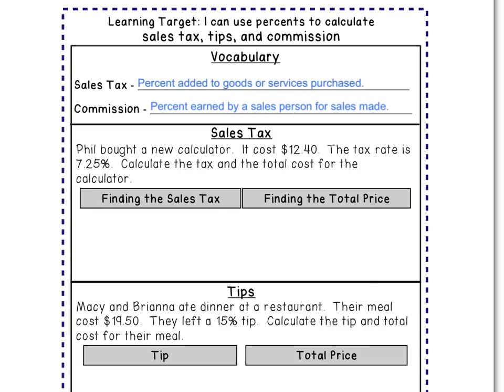Phil bought a new calculator. It cost $12.40 and the tax rate is 7.25%. We need to calculate the tax and the total cost for the calculator. This is a two-step process. First, we need to figure out what the tax is. The way to think about it is to ask: what is 7.25% of $12.40?